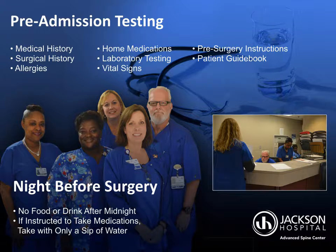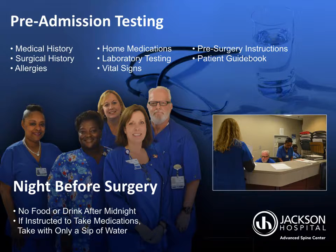You'll visit the hospital for your pre-admission testing visit prior to your procedure. You'll be asked about your medical history, previous surgeries, allergies, and medications. Please bring a complete and up-to-date list of your home medications. Laboratory tests such as blood work or an electrocardiogram will be done as indicated, and vital signs including blood pressure, temperature, heart and respiratory rate, and oxygen level will be collected. Depending on your medical history, you may need approval for surgery from your medical doctor or cardiologist. You'll be given day-of-surgery instructions, including what medications to take and what time to arrive. You'll be instructed not to eat or drink anything after midnight the night before surgery. If instructed to take medications the morning of surgery, take them with only a sip of water.